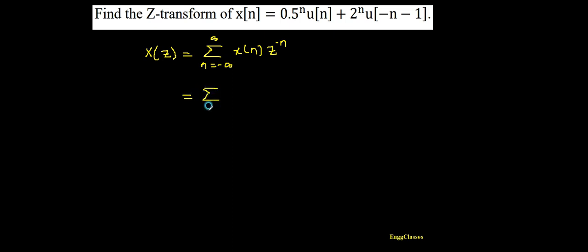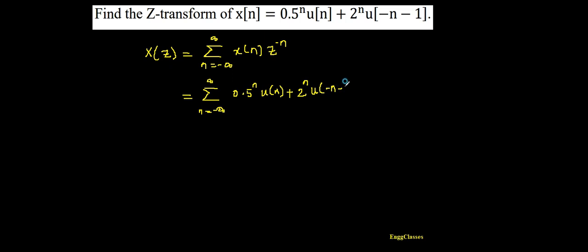Therefore I am ultimately going to get the summation from n equal to minus infinity till infinity, with respect to the first term including x(n) as 0.5 to the power n times u(n), plus 2 to the power n times u(-n-1), both multiplied with z to the power minus n.